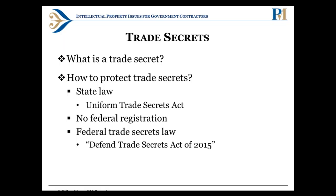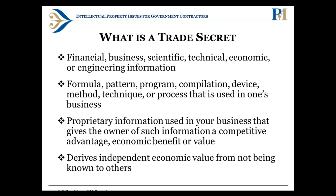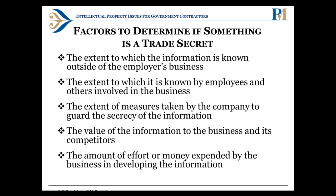In contrast to federal trademark registration, there is no federal registration process with the USPTO for trade secrets — that makes this area a bit more nuanced in how you protect them. For government contractors, examples of things that might constitute trade secrets include financial, business, scientific, and technical information, formulas, and other proprietary information used in your business that you wouldn't want your competitors to know about.